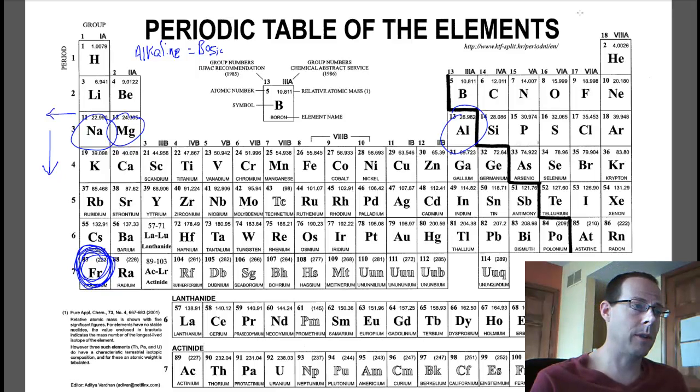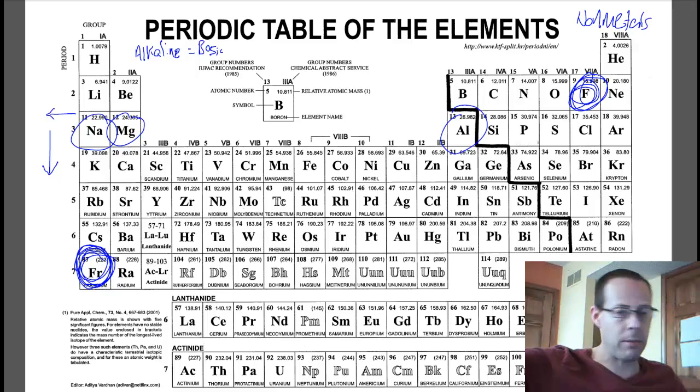Non-metals, so then we have non-metals, and it's kind of just the opposite over here. So the most reactive non-metal is fluorine. So we kind of have these extremes in the periodic table where fluorine is the most reactive non-metal, and francium is the most reactive metal.